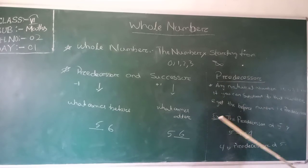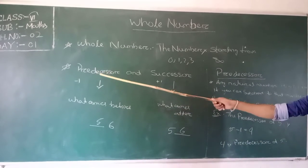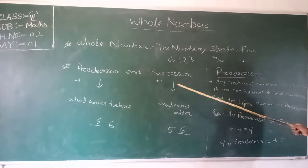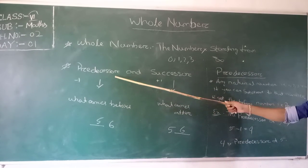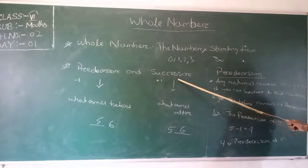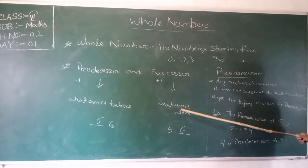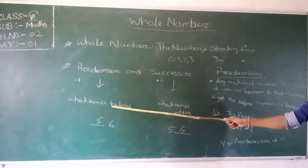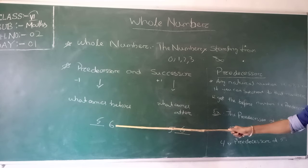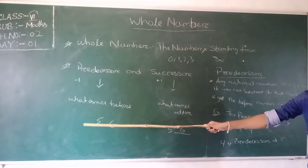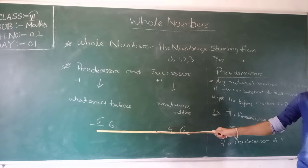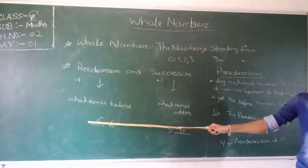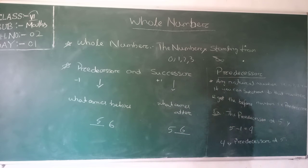The next topic is Predecessors and Successors. Predecessor means what comes before, and Successor means what comes after. That means what comes before 6 is 5, that is 6 minus 1 equals 5.